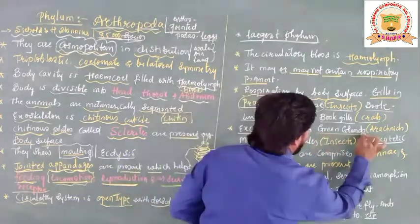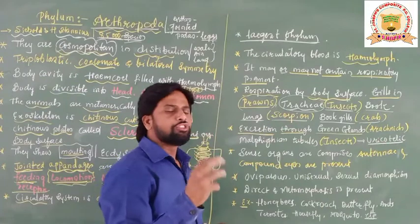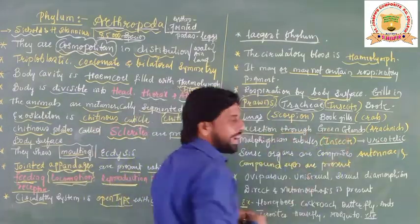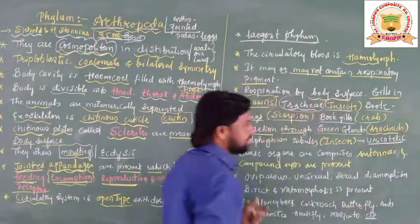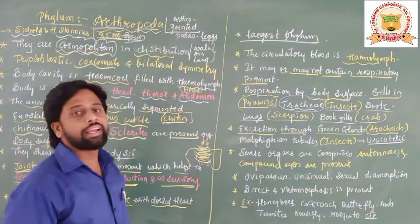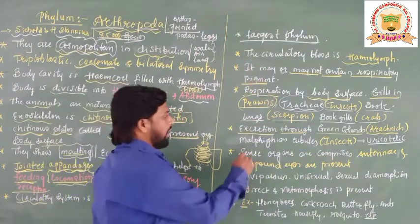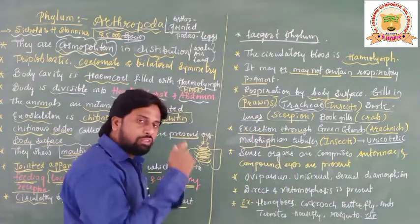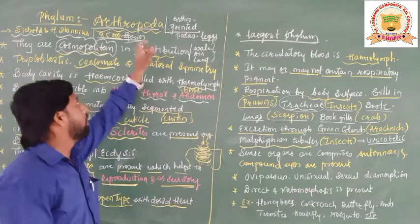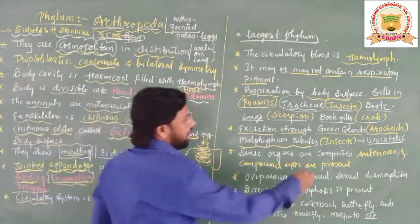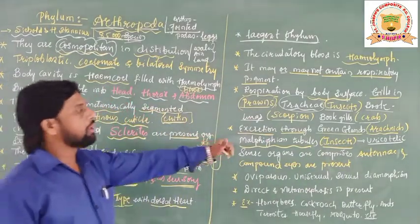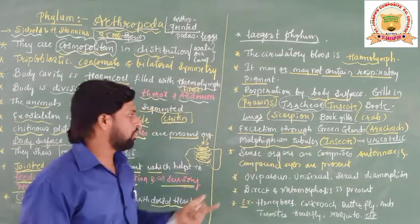Excretion occurs through green glands. Just as we have seen nephridia in Annelida, in Arthropoda green glands are the excretory organs, found in arachnids. Malpighian tubules are another very important and peculiar excretory structure of phylum Arthropoda, found especially in insects.